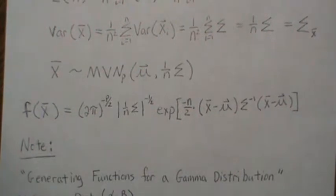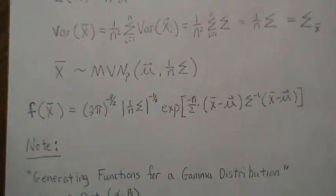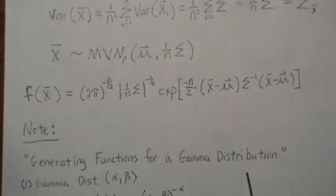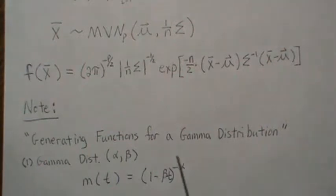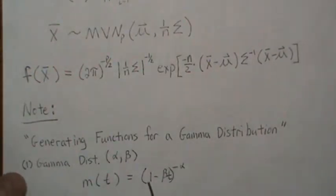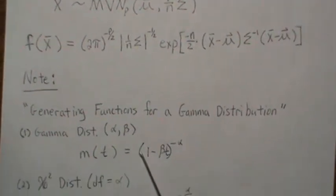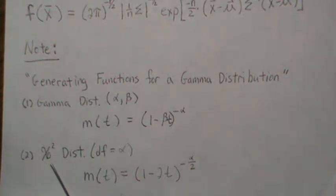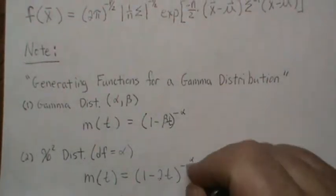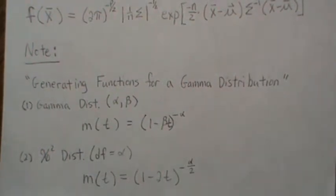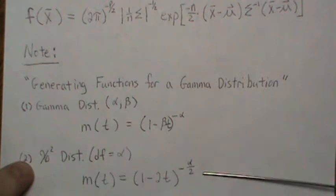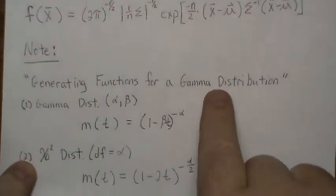Two notes before we go to the next page. I have a video called Generating Functions for a Gamma Distribution where we derive the moment-generating function for a gamma distribution, which is 1 minus beta times t raised to the minus alpha. Since a chi-squared distribution is a gamma, by default the chi-squared distribution with alpha degrees of freedom has MGF 1 minus 2t raised to the minus alpha over 2. We're going to need to remember this moment-generating function.